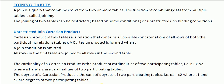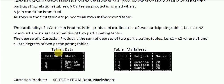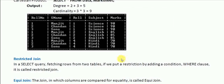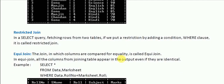In this tutorial we are going to learn about the different types of joins. As you have already known, an unrestricted join or the Cartesian product is one type of join. We are mainly considering two tables: one is the 'data' table and the other is the 'mark sheet' table.